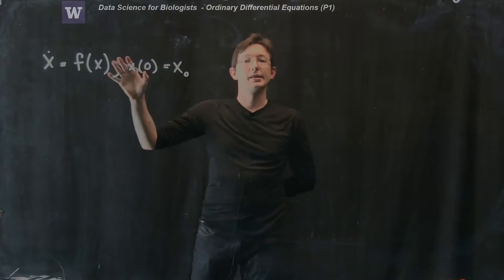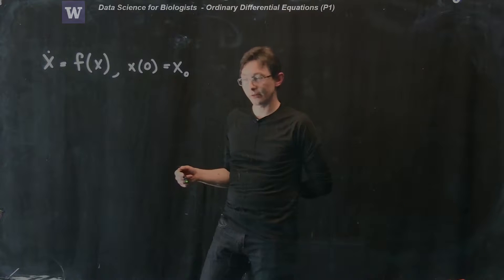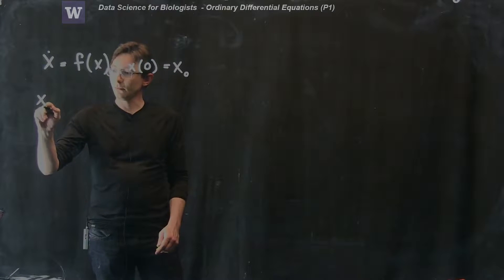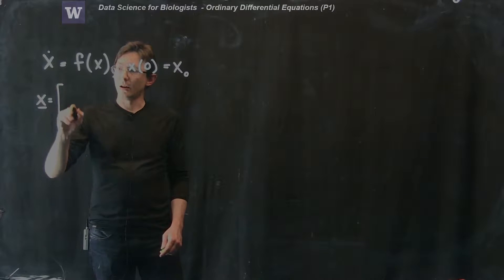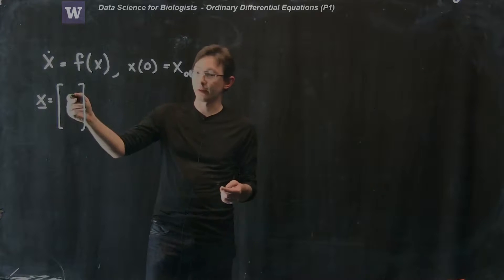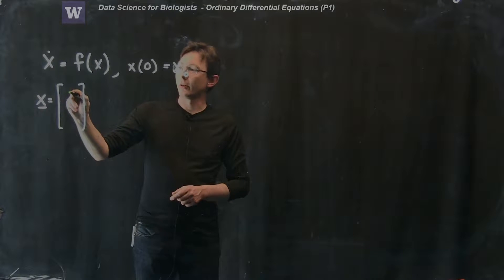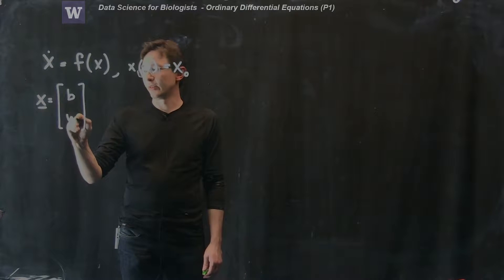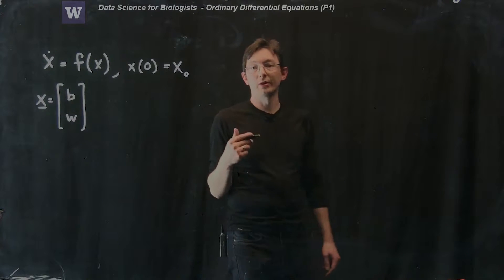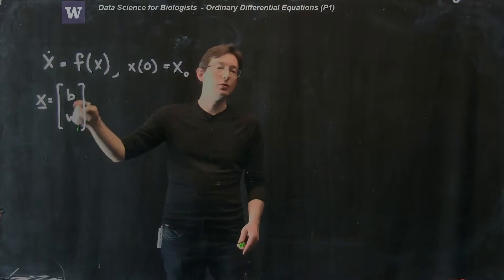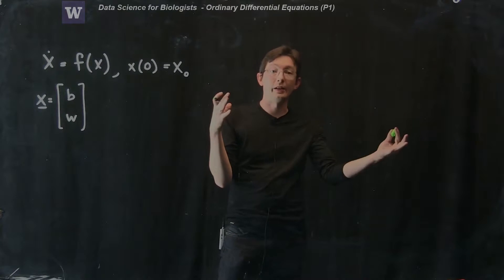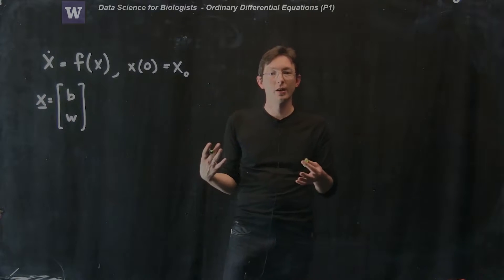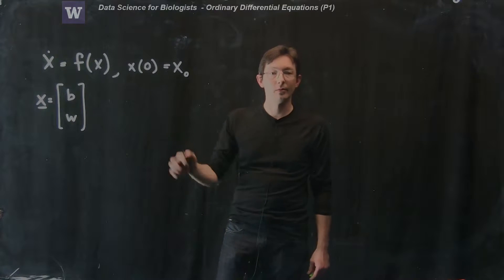This is usually the standard framing of an ordinary differential equation and we're going to have an example from population dynamics where x is a vector of populations. So the first component is going to be the number of bunnies B and the second variable is going to be the number of wolves W. We're going to see that these two populations, the number of bunnies depends on how many wolves there are and how many bunnies there are and the same thing with wolves. So this is a resource constrained population problem that we're going to look at later.